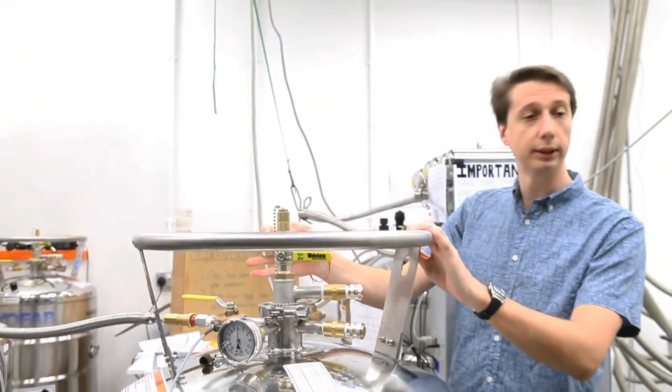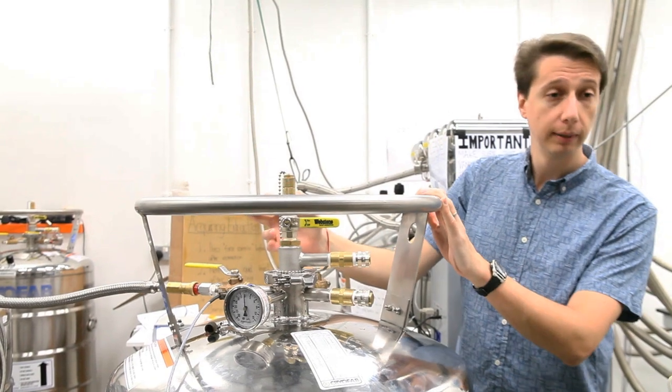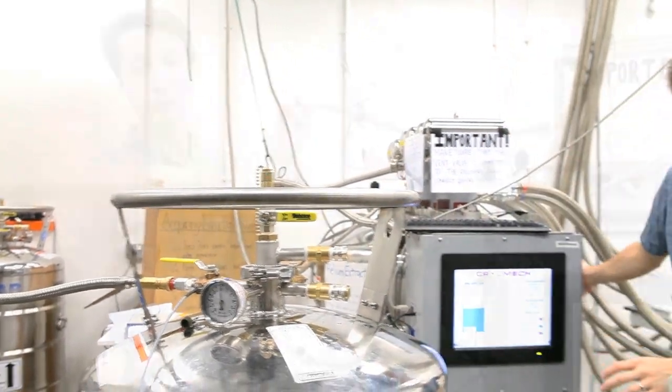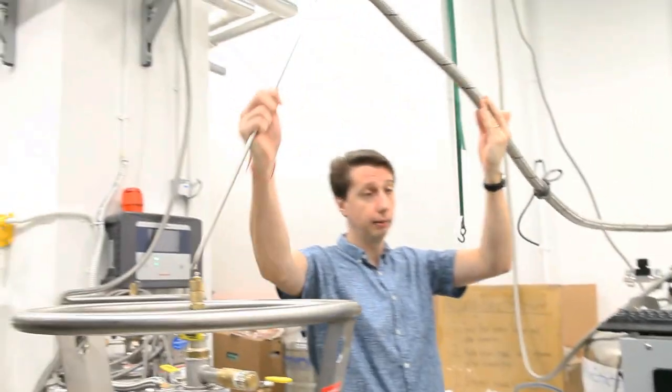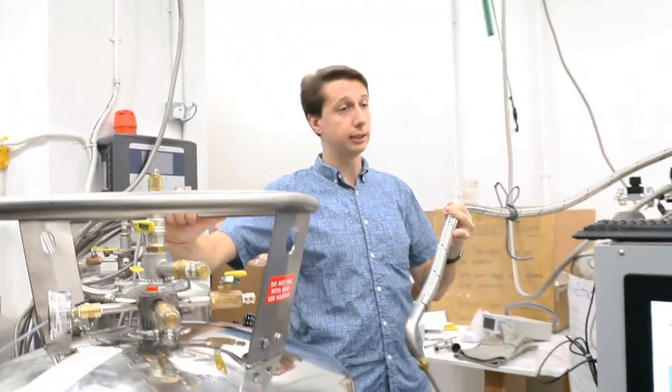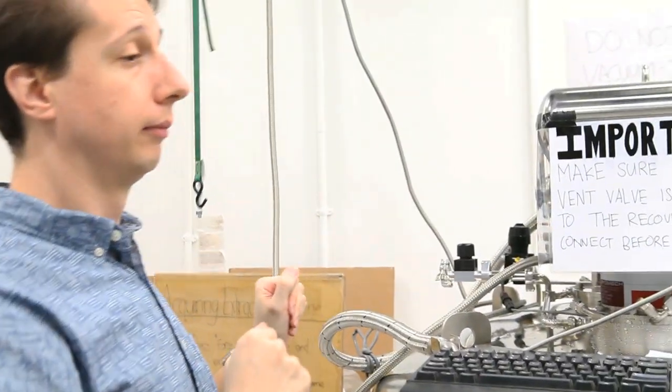When a scientist needs liquid helium for their experiments, it is transferred out of the DUA, through an insulated pipe, and into one of these smaller, wheeled transport DUAs. Users can then collect the little DUA, take it to their lab, and transfer the liquid into their equipment.